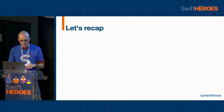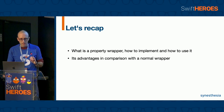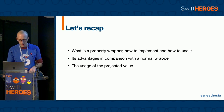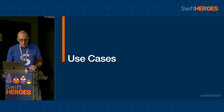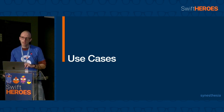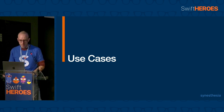A quick recap. In this third part, we have seen what a property wrapper is, how to implement and how to use it, its advantages in comparison with a normal wrapper, and the use of the projected value. Now we are going to explore some use cases that we actually use in our architecture, and that might give you some ideas for implementing your own property wrappers.